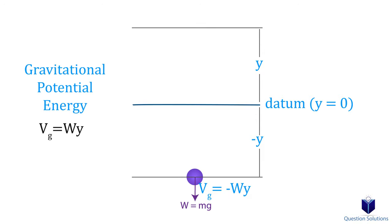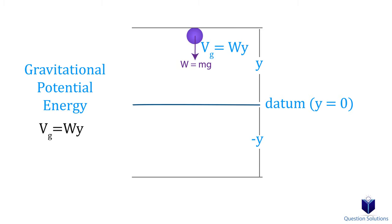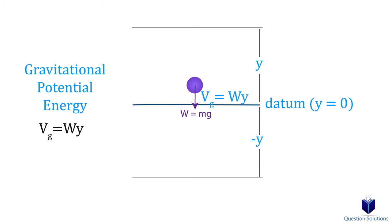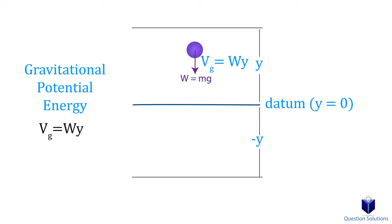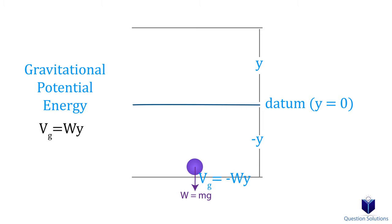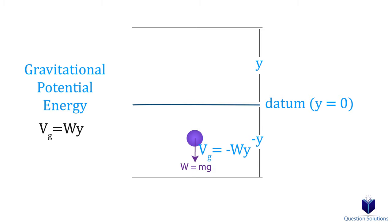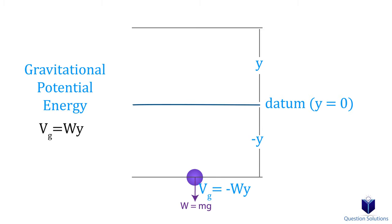There is something important to note here, which is knowing what positive and negative potential energy is. If the particle is above the datum and moves down towards the datum, the work done by weight is positive, which means the potential energy is positive. Now if the particle is below the datum and is moving towards the datum, the work done by weight is negative. So in other words, if the particle is below the datum, then the potential energy is negative.